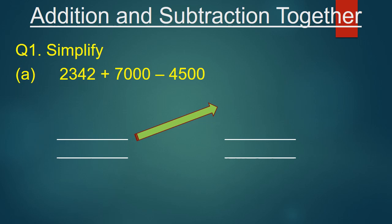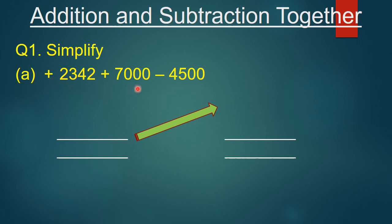Addition and Subtraction together. Question Number 1, Simplify. Part A: 2342 plus 7000 minus 4500. If addition and subtraction are given together, we always add first — pahele hum add karte hain — and then subtract. So let's solve Part A. In this type of question, we always put a plus sign in front of the first given number. Now we will add these two numbers.